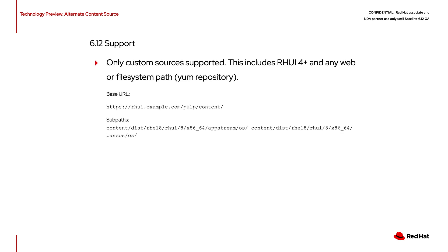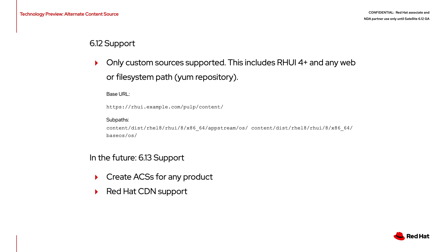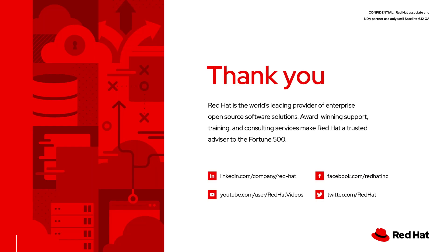Here are a few notes about alternate content sources while it is in tech preview in 6.12: it only works with custom sources and Red Hat update infrastructure version 4 and above. In Satellite 6.13, we are planning to enable alternate content sources for any product as well as the Red Hat content delivery network. Thanks for listening.